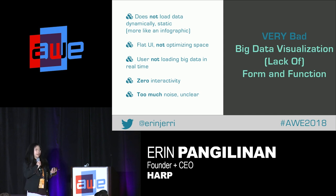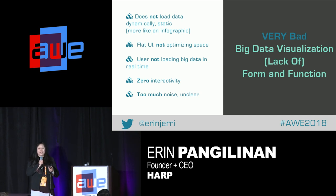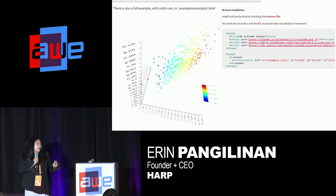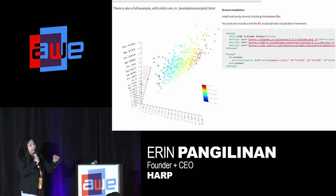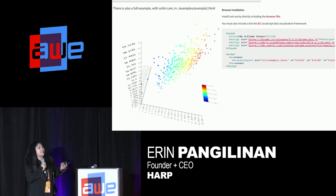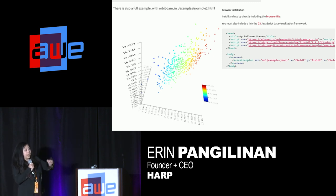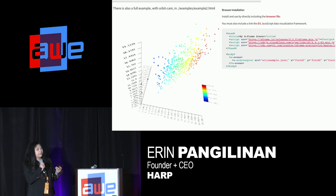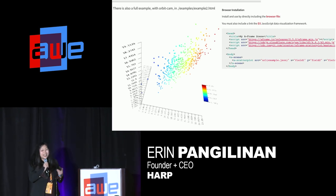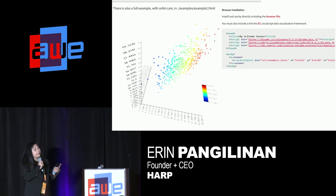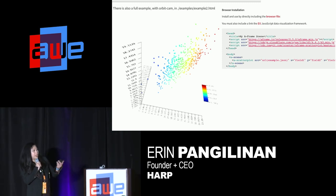Much of the data you see — especially I've seen it overused in Microsoft HoloLens — is flat UI. It doesn't load in real time, there's almost no interactivity, and there's so much noise you don't even understand what's going on. There's a lack of form and function. Here's something really simple from the A-Frame team: just a plain scatter plot. On the right-hand side is an A-Frame embedded scene loading a JSON file — pretty simple. That JSON file could have been a SQL table of genomics data for all I care. It's something very simple, but it works. Would I call it a big data visualization? Not necessarily, but I would call it a data visualization because it is simple, it can be interactive in a headset, and it's understandable.